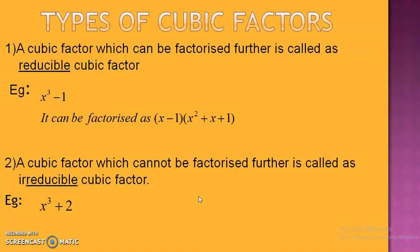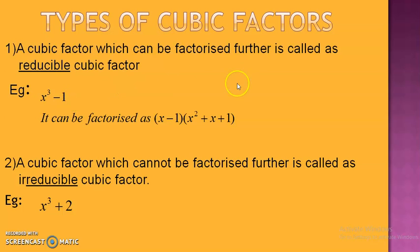Just like quadratic factors, cubic factors can also be classified as reducible and irreducible. The cubic factor which can be factorized further is called a reducible cubic factor. For example, x cubed minus 1: we write 1 as 1 cubed and apply the formula a cubed minus b cubed equals (a minus b)(a squared plus ab plus b squared). So x cubed minus 1 equals (x minus 1)(x squared plus x plus 1) — it is a reducible cubic factor. Whereas x cubed plus 2 cannot be further factorized, so it is called an irreducible cubic factor.